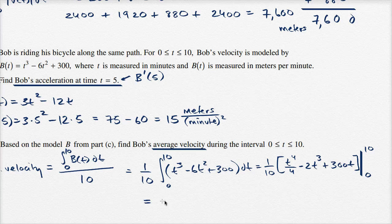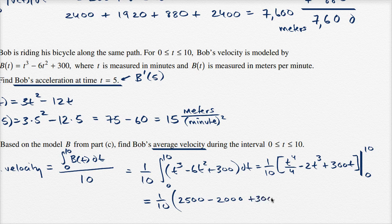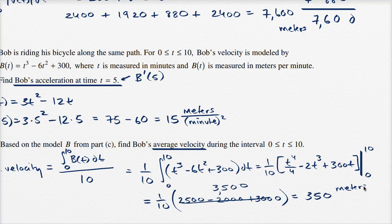This is going to be equal to one-tenth times: when you evaluate at 10, ten to the fourth is 10,000 divided by 4 is 2,500; minus 2 times 10³ is minus 2,000; plus 300 times 10 is plus 3,000. Subtracting the evaluation at 0, which is zero. So 2,500 minus 2,000 is 500, plus 3,000 is 3,500, divided by 10 equals 350. The average velocity is 350 meters per minute.